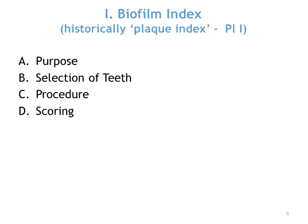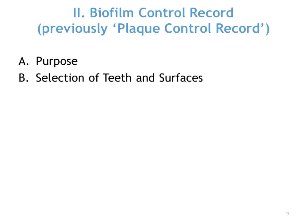You pass the probe or explorer around the cervical thirds — is biofilm there or not? If it's not there, you have a score of zero, and it goes up to a score of three. The plaque index is also used in conjunction with the gingival index: is there plaque there, and if so, is there bleeding as well? A zero means no biofilm, a one means a thin film adhering, a two is moderate, and a three indicates a large accumulation. The lower the number, the better.